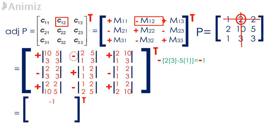This gives us the cofactor matrix of P to be: 15, negative 1, negative 4, 0, 1, negative 1, negative 10, negative 1, 6. Interchanging the rows and columns of the cofactor matrix of P gives us the adjoint matrix of P.